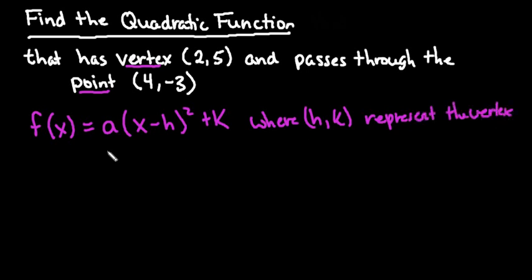So basically all we are going to do is we don't know what a is. a is our missing value, so in order to come up with the function that passes through these points, I have to plug in all the values that we know.